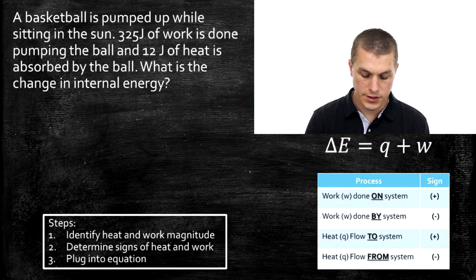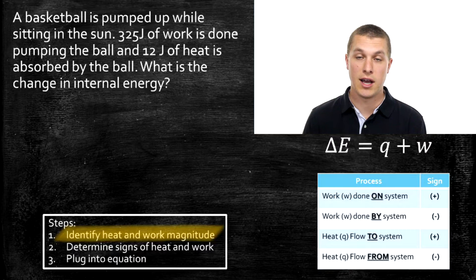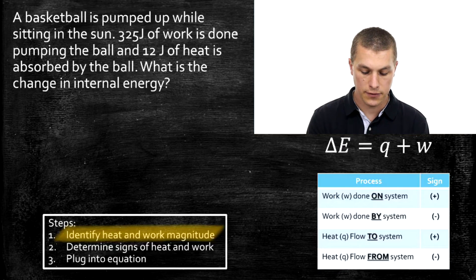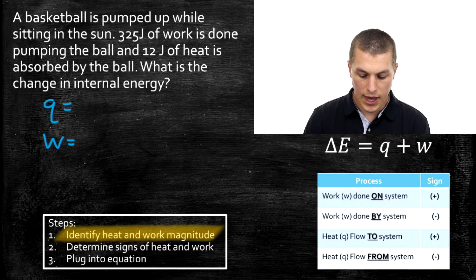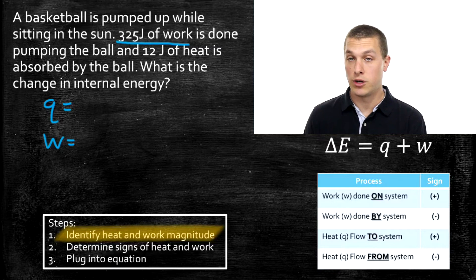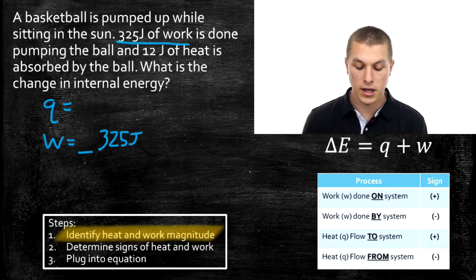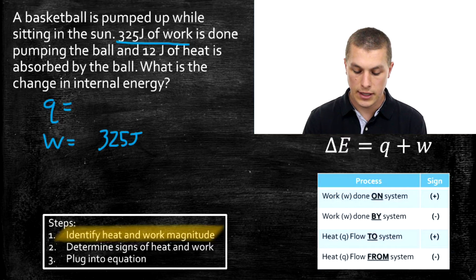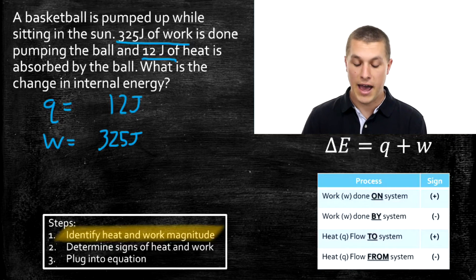I've broken this problem into three steps. The first step is to identify the heat and work magnitude — meaning how big they are, but not yet their signs. We're going to look for Q and W in our problem. The first thing listed is 325 joules of work, so we write down 325 joules and leave a space to fill in the sign. It also says 12 joules of heat is absorbed by the ball, so our Q equals 12 joules.